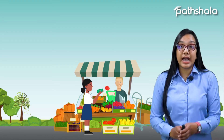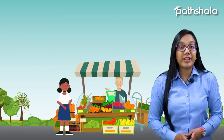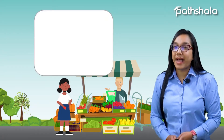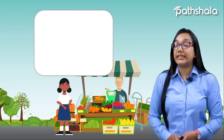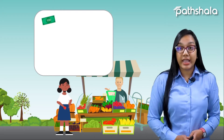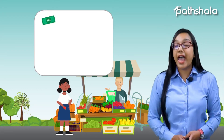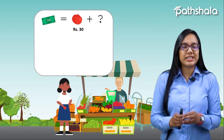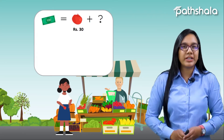She bought apples that cost 30 rupees per kg. Now she was confused about how much money would be left after spending 30 rupees out of 100. So she started doing calculations in her mind very smartly — she was having 100 rupees at first, and after spending 30 rupees there should be some amount of money left.